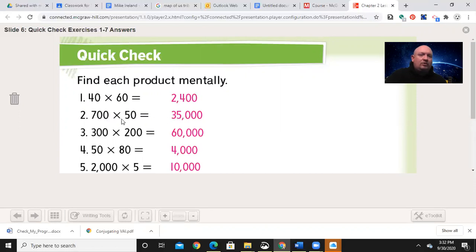7 times 5 is 35, three zeros. 300 times 200: 3 times 2 is 6, and there were 4 zeros, so that gives us 60,000.